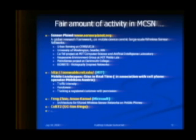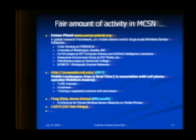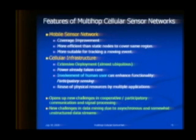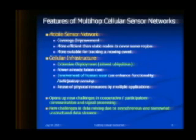Fair amount of work is going on in this broad domain. There is sensor planet work at UCLA, MIT is involved, former student Aman Kansal now works at Microsoft Research in Redmond with Feng Zhao looking at some of these things. The whole notion of participatory sensing is being brought into the picture. Cal IT2's Ramesh Rav and his group are also looking at some of these things. The primary motivation is that you already have this infrastructure — why not exploit it? Combining cellular networks with sensor networks offers mobile sensor network coverage improvement, more efficient static nodes, and suitability for tracking.